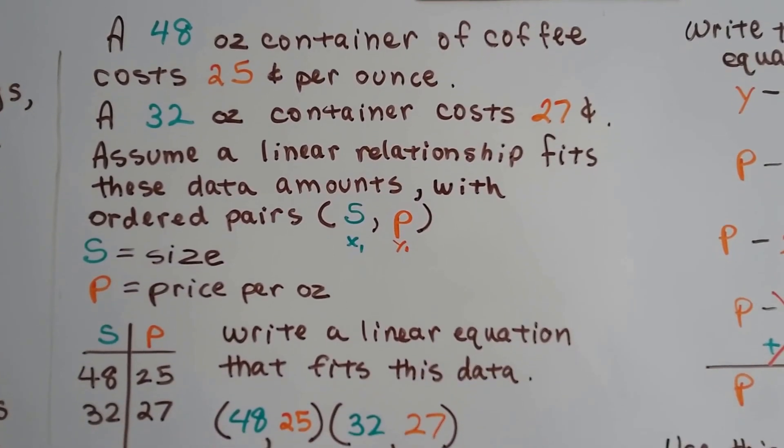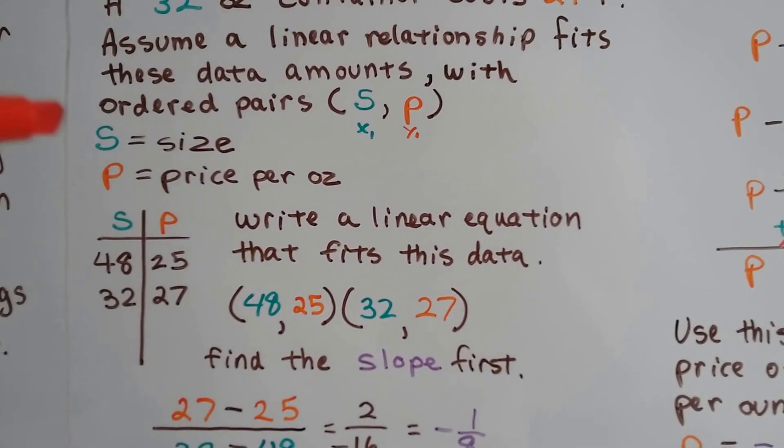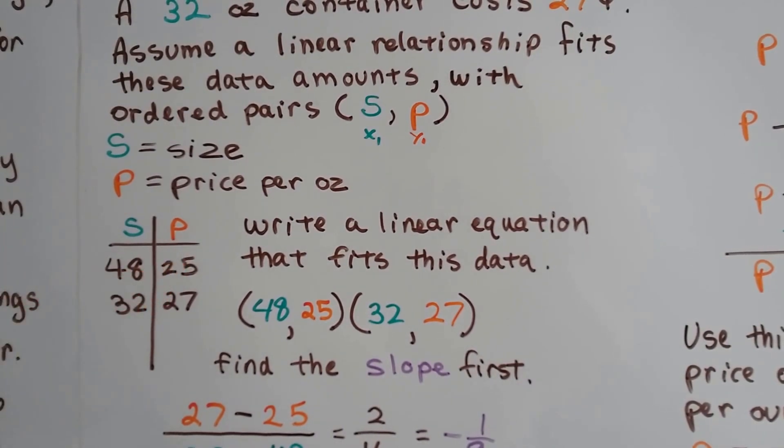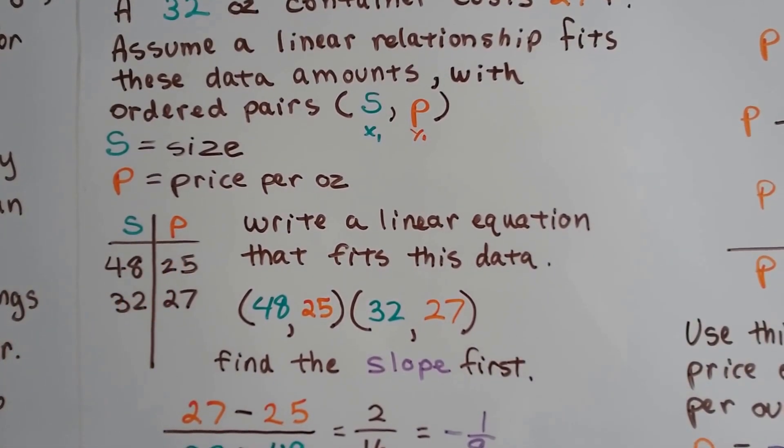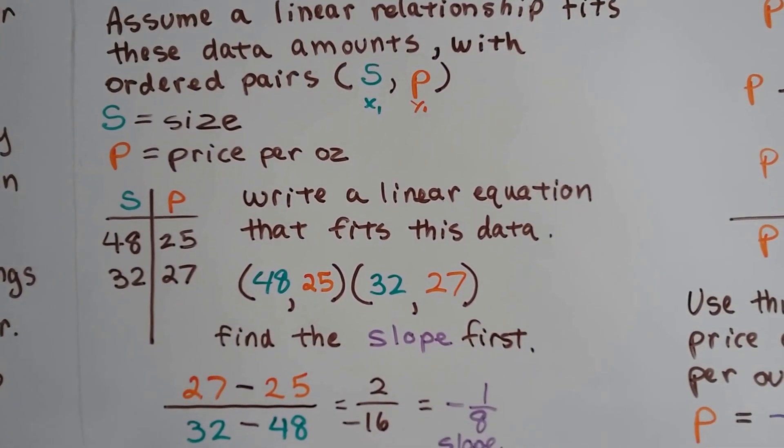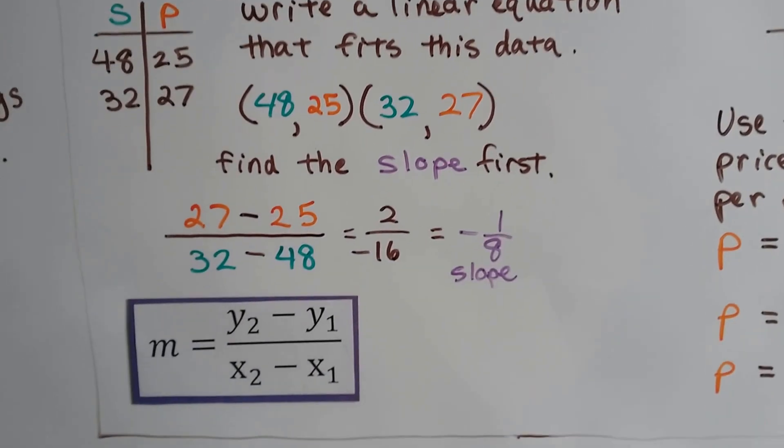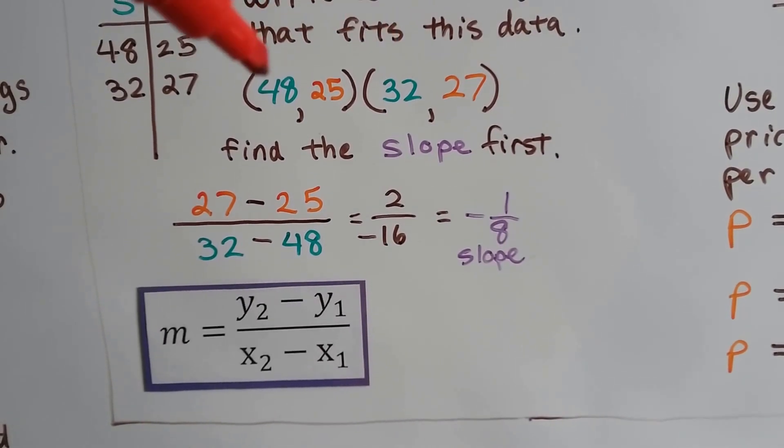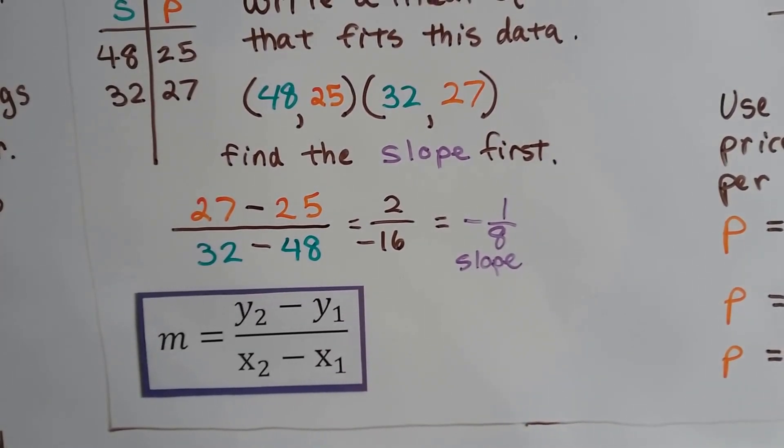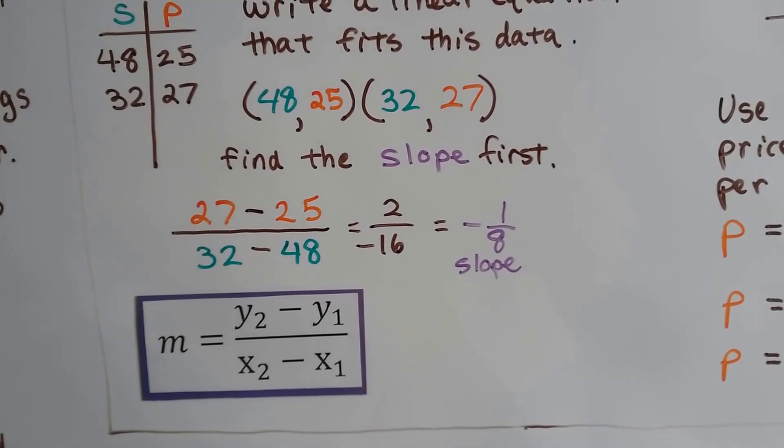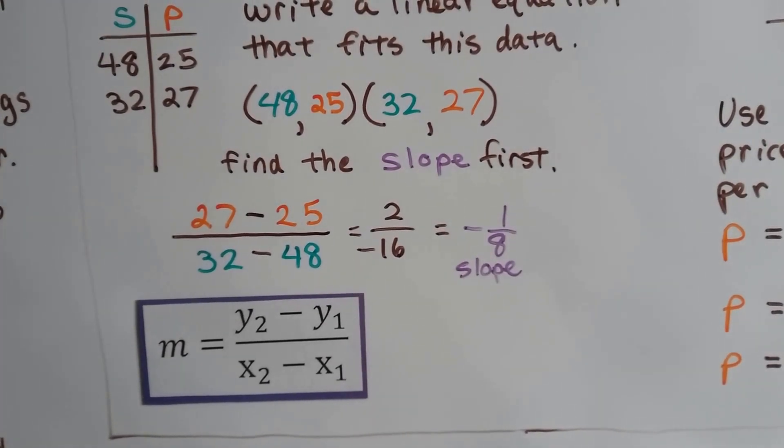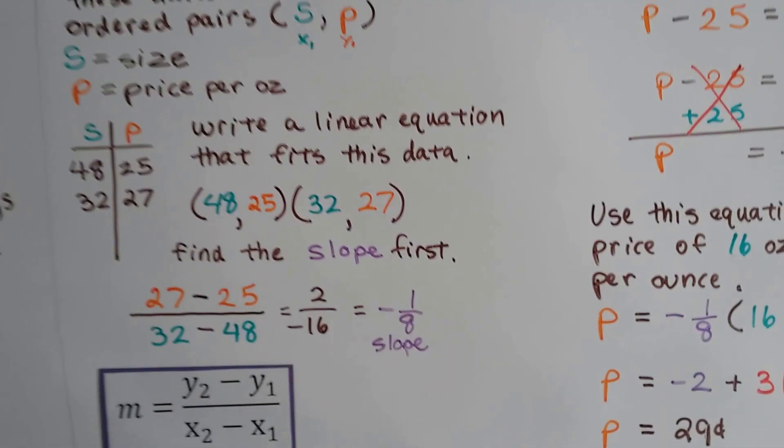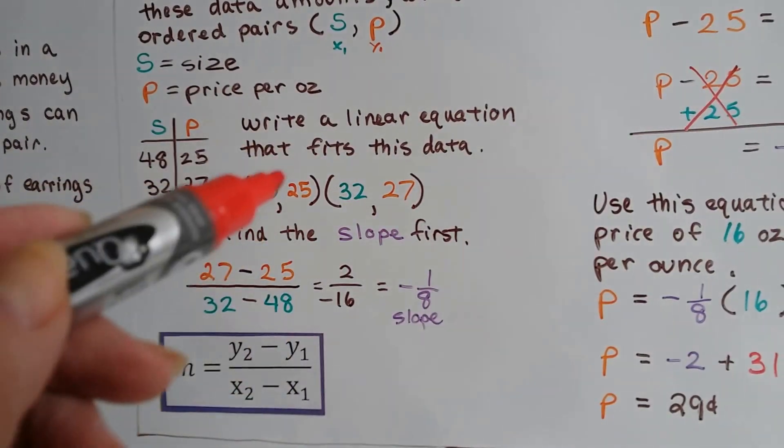That'll be the size and the price. We can write a function table with our X value and our Y value as S and P. 48-ounce is 25 cents per ounce. 32-ounce is 27 cents per ounce. And we write our ordered pairs 48-25 and 32-27. Now we can find the slope first. That's the first thing we do. So we do our Y2 minus Y1 and our X2 minus X1 and we get 27 take away 25 is a 2 and 32 minus 48 is a negative 16. Well, that gives us a negative 1/8th slope. See? We just used this formula. So now we've got negative 1/8th slope. We need to pick one of these ordered pairs. And I chose this one.